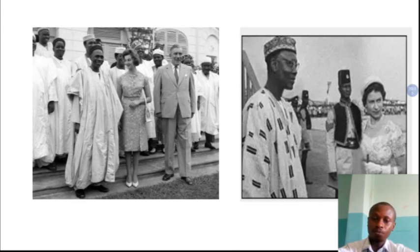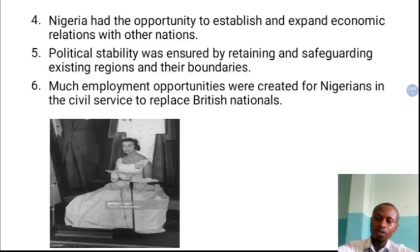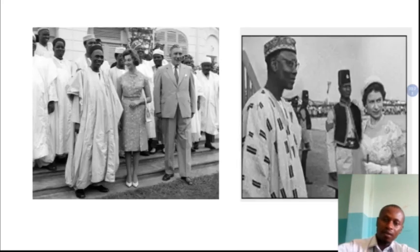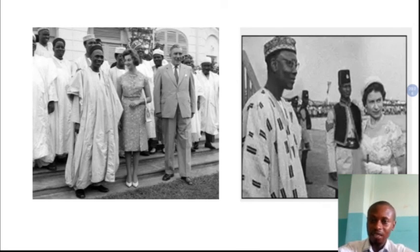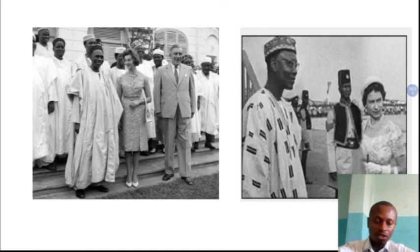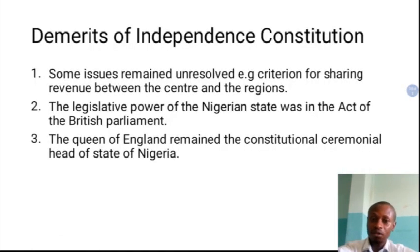Looking at this picture, you will see Princess Alexandra, the cousin to Queen Elizabeth, who came to Nigeria and represented Queen Elizabeth. She was the one who handed over power to the Nigerian people. You can see her here standing with Sir James Robertson, alongside the first and only prime minister of Nigeria. You can also see a picture with Queen Elizabeth as well.